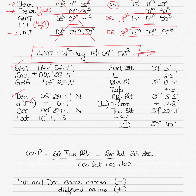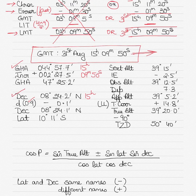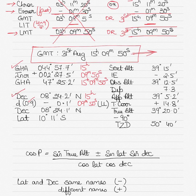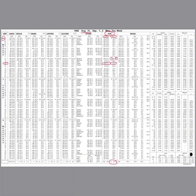We now find the increment for 9 minutes and 50 seconds — the minutes and seconds beyond 1500 hours — to correct the GHA and declination to the exact time of 15 hours 09 minutes 50 seconds. We go to the increments and corrections page in the nautical almanac for 9 minutes and 50 seconds.